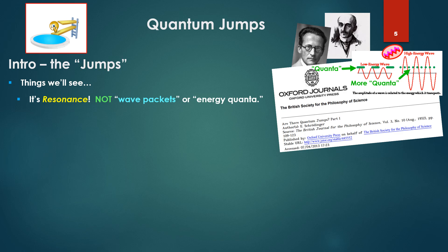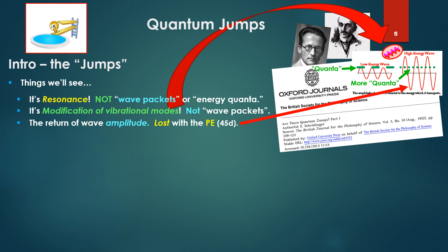Things we'll see: It's resonance, not wave packets or energy quanta. That is, as we looked at on the photoelectric effect and black body radiation, this little parcel of a wave, an energy quanta. More quanta, more amplitude. It's modification of vibrational modes, not wave packets. We'll see the return of wave amplitude, lost by the photoelectric effect. A particle will become, again, a wave spread throughout the whole of space.